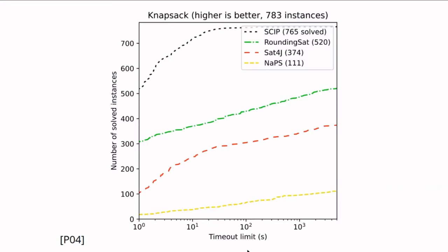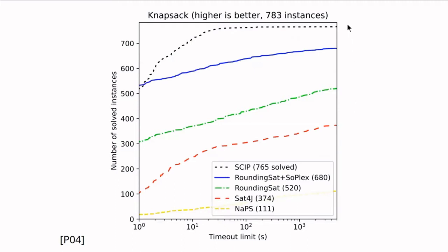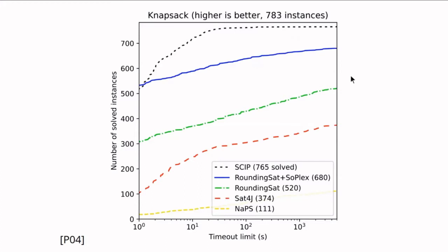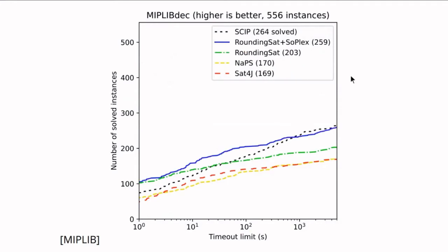Next are knapsack problems, shown as a CDF plot: for a given timeout limit on the x-axis, how many instances on the y-axis would have been solved — the higher the line, the better. SCIP employs a specialized dynamic programming routine for knapsack and performs almost optimally. PB solvers are not great here: RoundingSAT solving only 520 instances and NAPS little more than a hundred. However, integrating SoPlex into RoundingSAT more than halves the gap between SCIP and RoundingSAT.